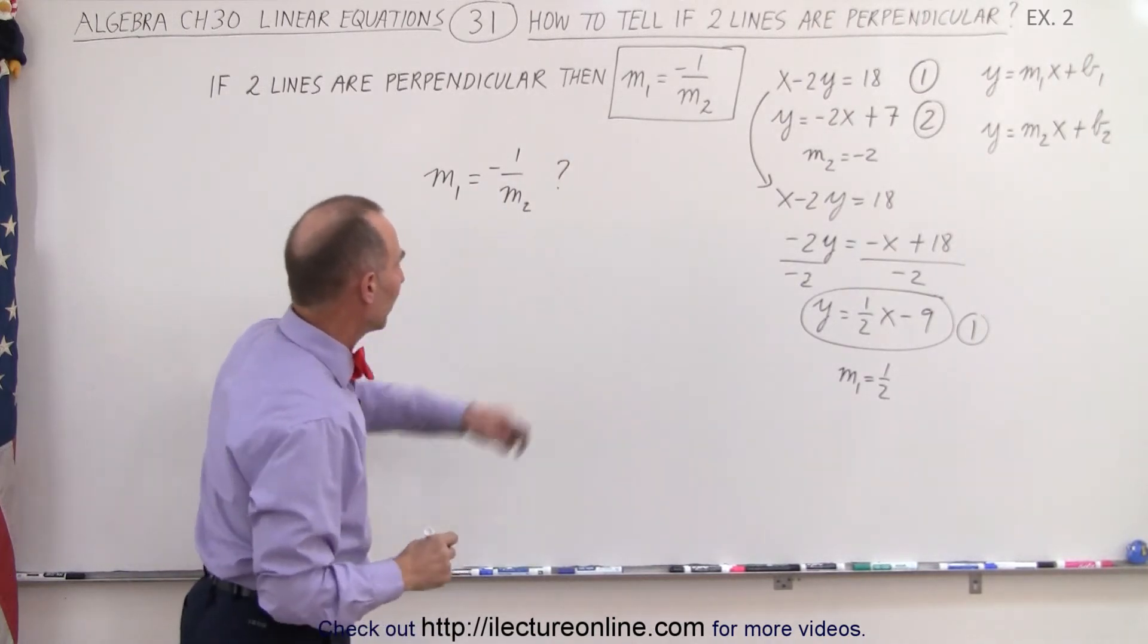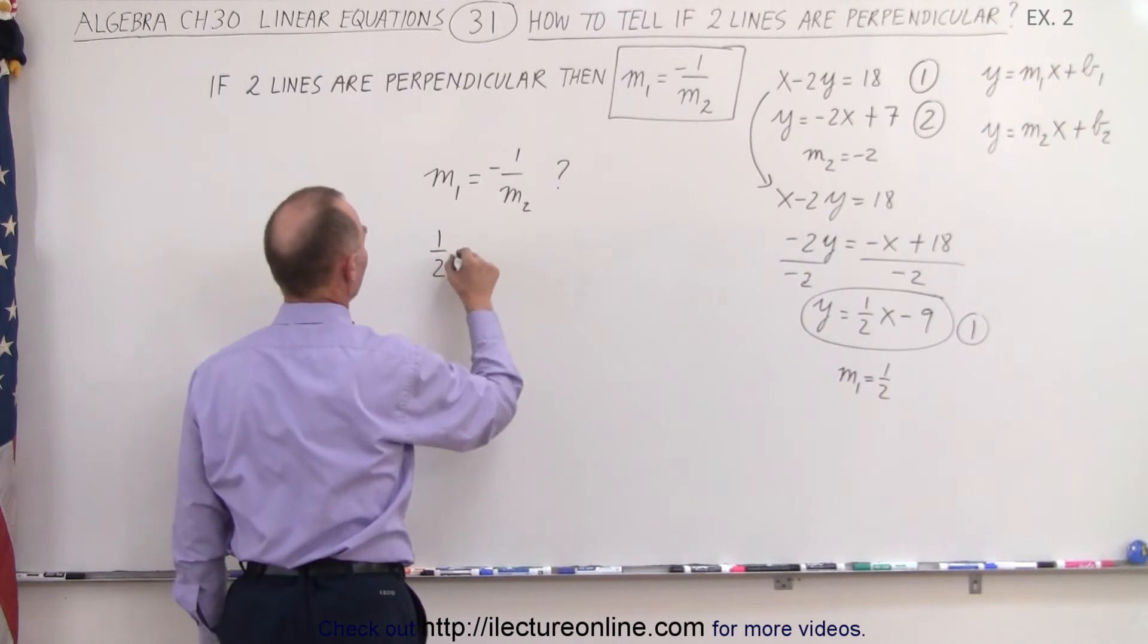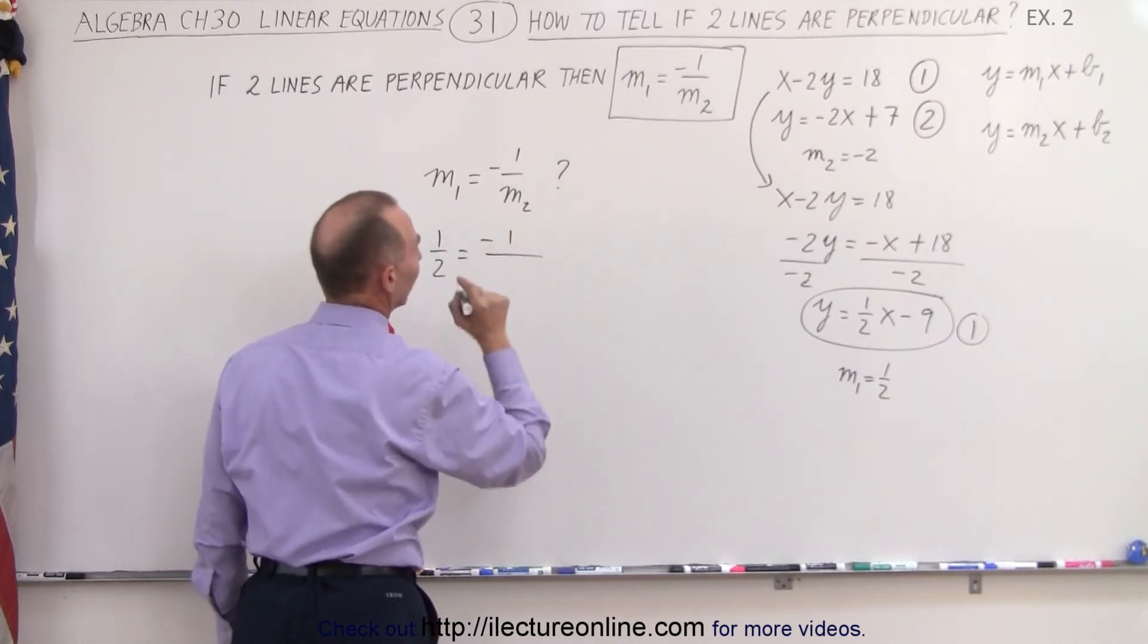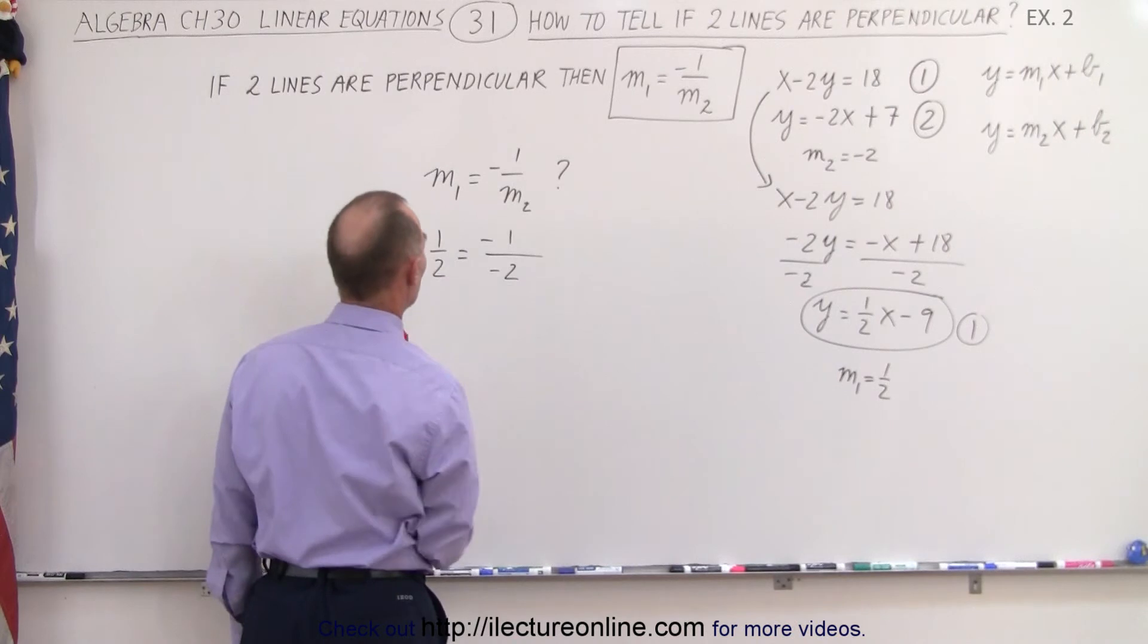What is m1? It's one-half. So we have one-half is equal to negative 1 over m2, and m2 is equal to negative 2.